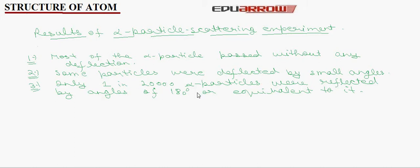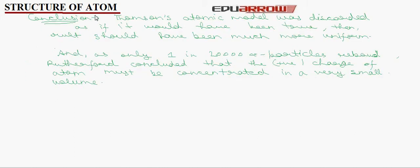Rutherford, on the basis of his alpha particle scattering experiment, discarded Thomson's model. If it would have been true, then results should have been more uniform. As only 1 in 20,000 alpha particles rebounded, Rutherford concluded that the positive charge of atom must be concentrated in a very small volume.